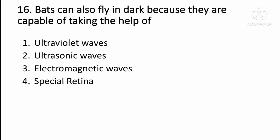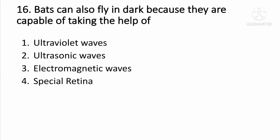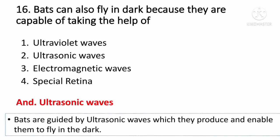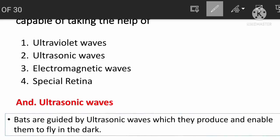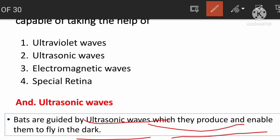Bats can fly in the dark because they are capable of producing ultrasonic waves. Option two: ultrasonic waves. The bats are guided by ultrasonic waves, which they produce and enable them to fly in the dark.